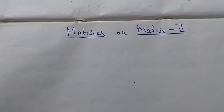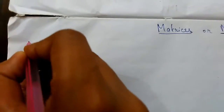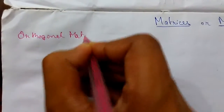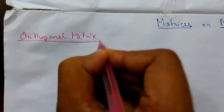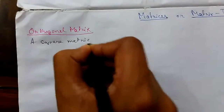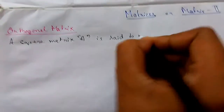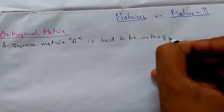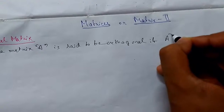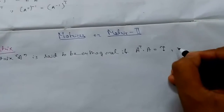Welcome back guys, today we will be continuing matrices, or matrix 2. Today our topic will be orthogonal matrix and trace of a matrix. So first, orthogonal matrix — let me define it. A square matrix A is said to be orthogonal if A transpose times A is equal to I, that is the identity matrix.